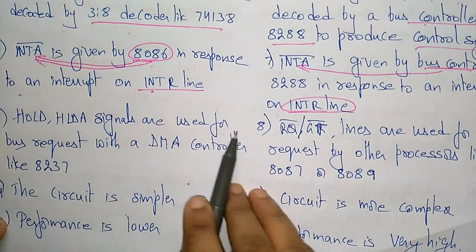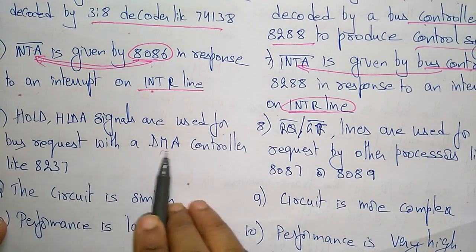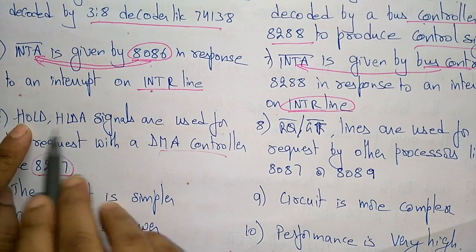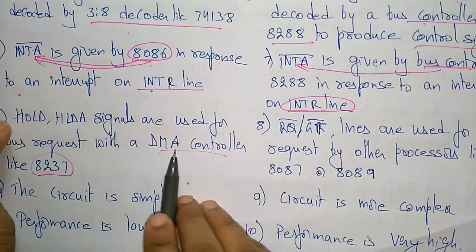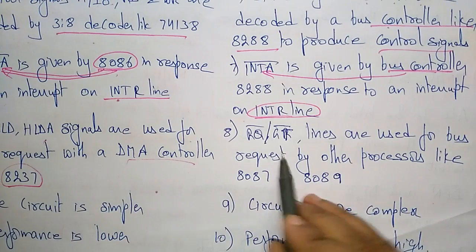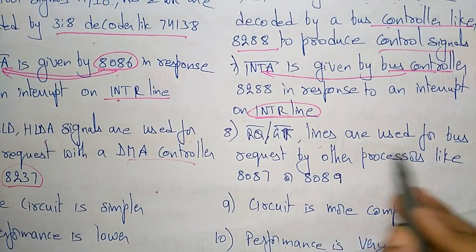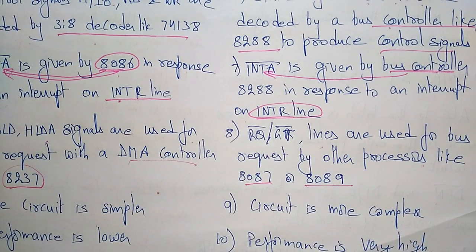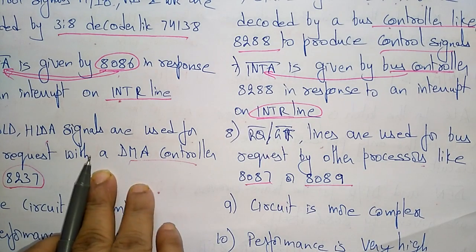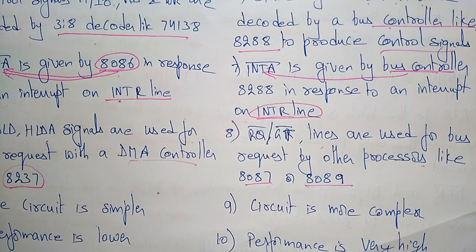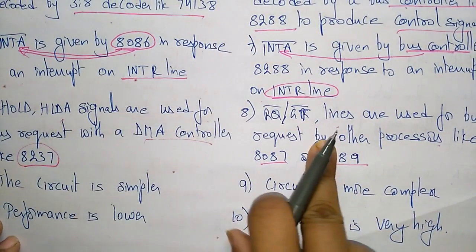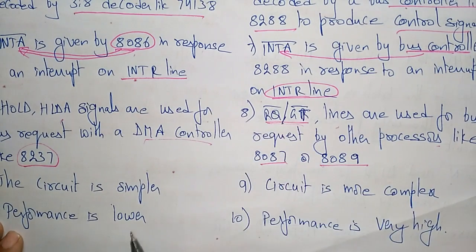In minimum mode, HOLD and HLDA — Hold Acknowledgement — signals are used for bus requests with the DMA controller like 8237. In maximum mode, the request and grant lines — RQ/GT — are used for bus requests by processors like 8087 or 8089. So instead of connecting a DMA controller, external processors are connected to request or grant the bus signals, replacing HOLD and HLDA with RQ/GT.